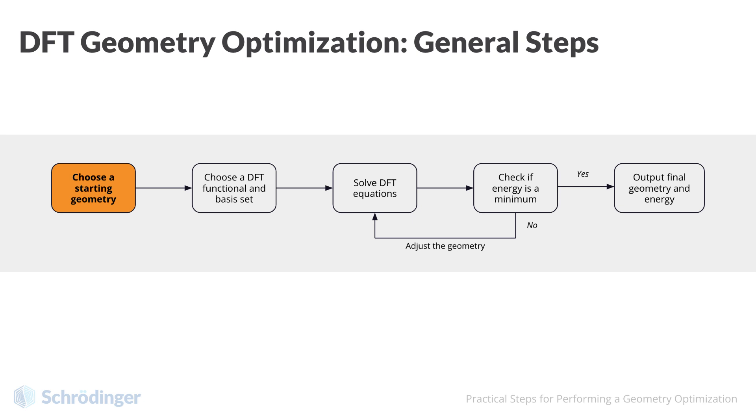Choosing a starting geometry: Recall that because we are trying to find a global minimum, we want to start from a good initial guess. That is, a molecular shape which we believe is close to this global minimum. This is the first step, to generate an input geometry.